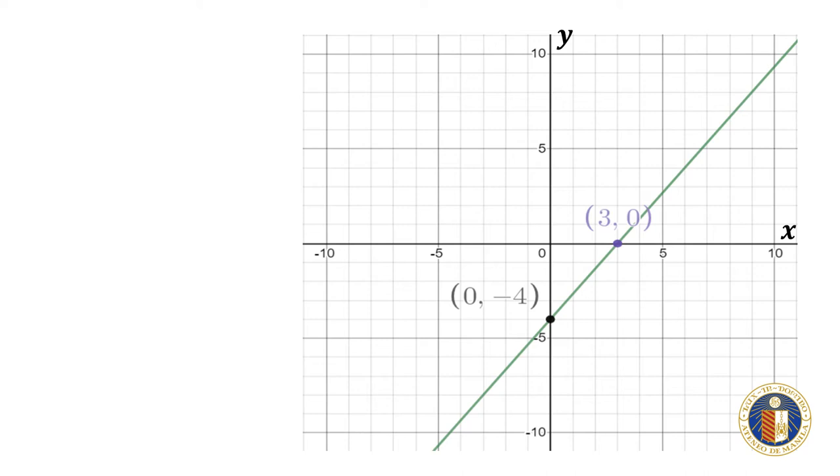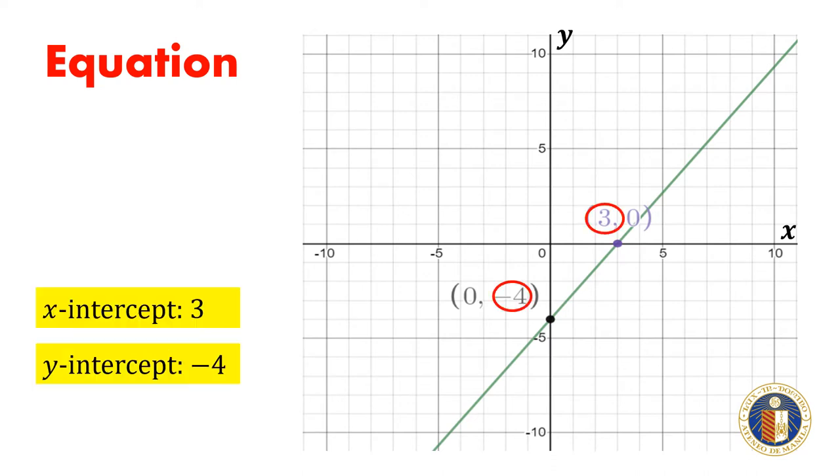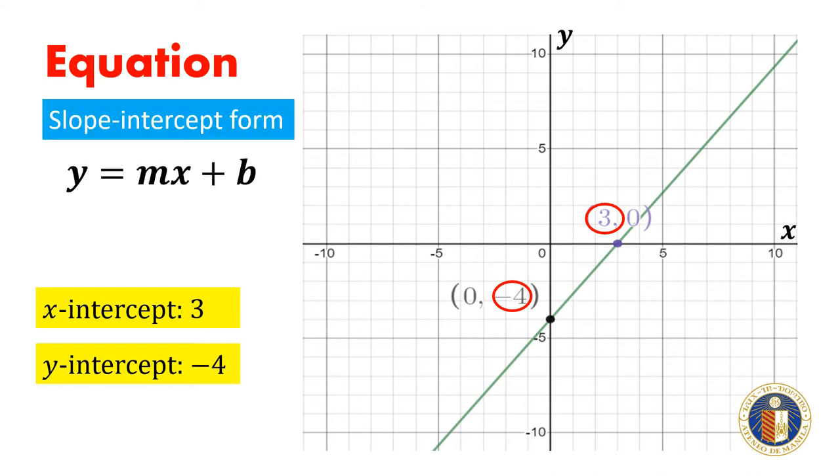Let's say we want to determine the equation of a line with an x-intercept of 3 and y-intercept of negative 4. We want the linear equation in slope-intercept form, which is y equals mx plus b, where m is the slope and b is the y-intercept.